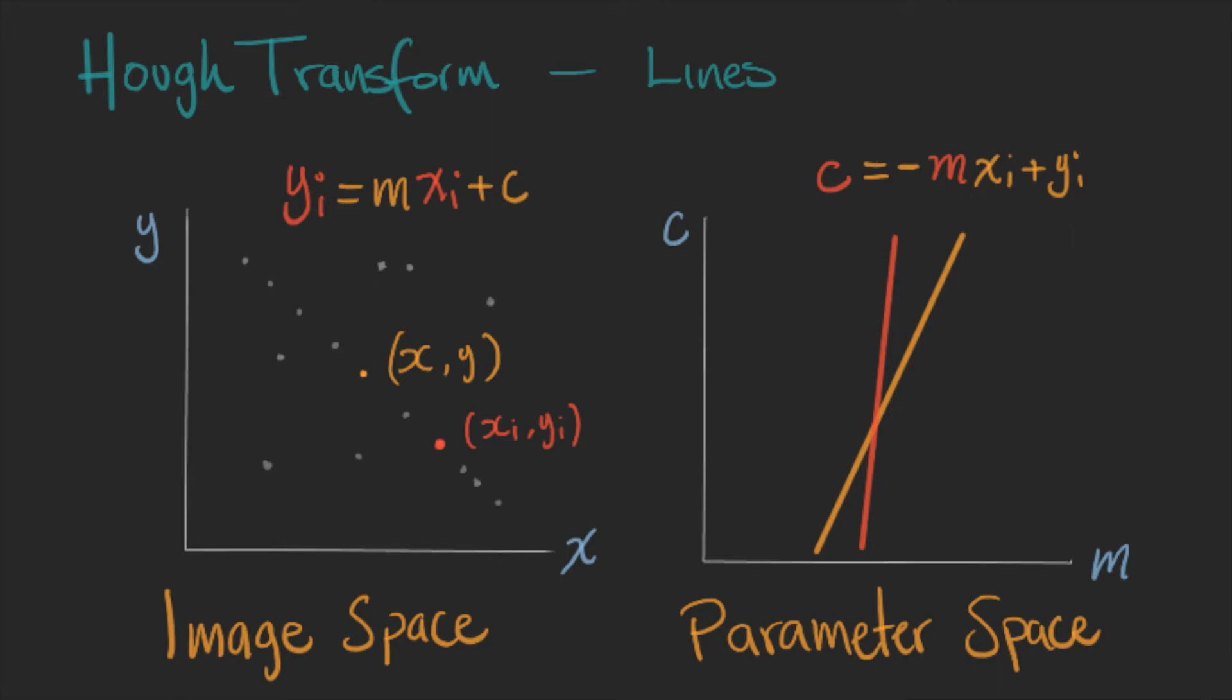Just to make it more explicit, let's take another point. This third point will create another line that intersects the other two in the same point mc.